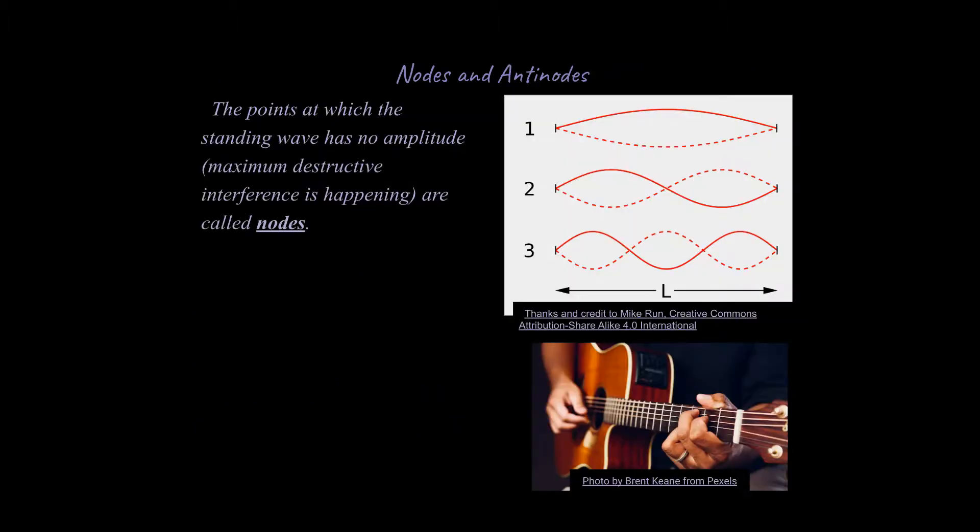And just to clarify a couple terms here, so the points at which the standing wave has no amplitude is going to be called a node. So there are multiple nodes here. Notice, yep, you could say the ends are called nodes as well, but this is going to be a node here, this is a node here, and this is a node here. So I'm going to show you with labels where our nodes are here. And so that would be where you have the maximum destructive interference happening, where there's essentially no amplitude as a result of the two interfering waves that cause the standing wave.